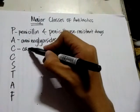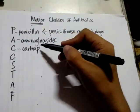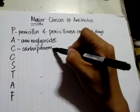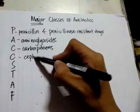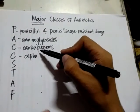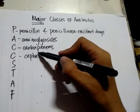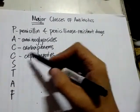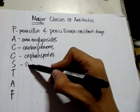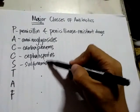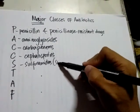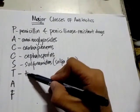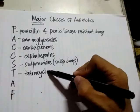C stands for your carbapenems. Another C stands for your cephalosporins — cephalosporins are divided into many generations, from generation one up to generation five. S stands for your sulfonamides, also called sulfadrugs. T stands for your tetracyclines.